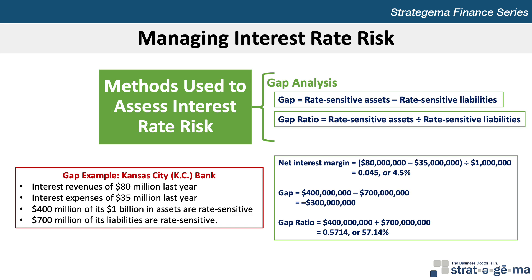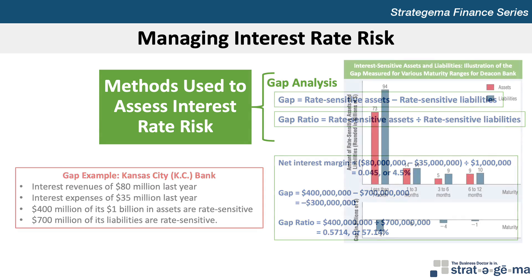Many banks classify interest sensitive assets and liabilities in various categories based on the timing of interest rate adjustments. By considering the schedule, the bank can determine the gap in each category and more accurately assess exposure to interest rate risk. For example, Deakin Bank compares the interest rate sensitivity of its assets versus its liabilities as shown in this exhibit. It has a negative gap in a less than 1 month maturity range, in the 3 to 6 month range, and in the 6 to 12 month range. Hence, the bank may hedge this gap if it believes that interest rates are sensitive.